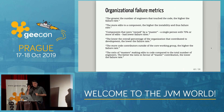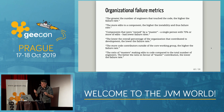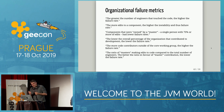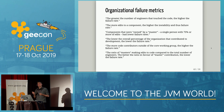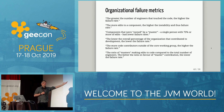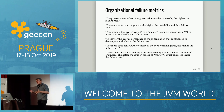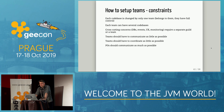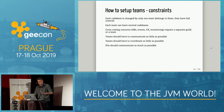The research says: the greater the number of engineers touching the code, the higher the failure rate. The more edits to a component, the higher the instability. Components owned by a single person with 75% or more of edits had lower failure rates. The lower the overall percentage of the organization contributing to development, the lower the failure rate. So we provided this research to management: each codebase can be changed by only one team. One team can have several codebases, but nobody else touches theirs.